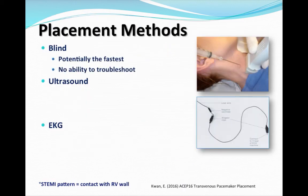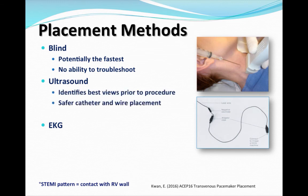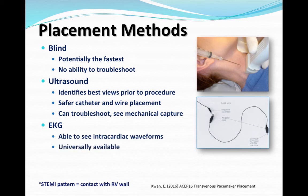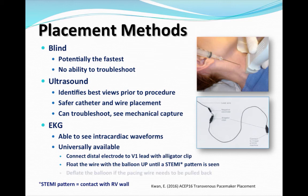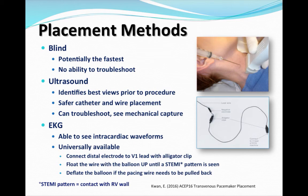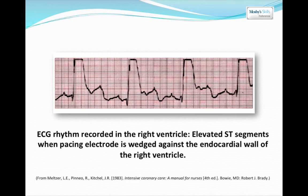There are a few different placement methods physicians can use: blind insertion, ultrasound, or EKG. Blind insertion is potentially very fast but there's no ability to troubleshoot. Ultrasound, which is probably what we'll use, is safer and allows us to troubleshoot and see mechanical capture. With EKG, we see intracardiac waveforms using an alligator clip connected to the distal electrode at the V1 lead, producing a pattern that looks like an injury pattern or ST segment elevation MI.